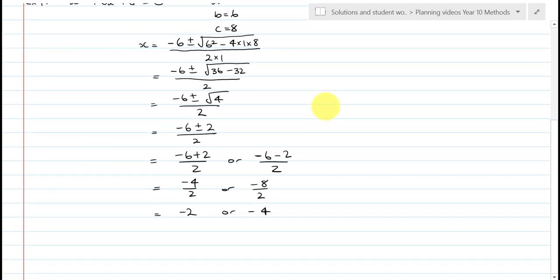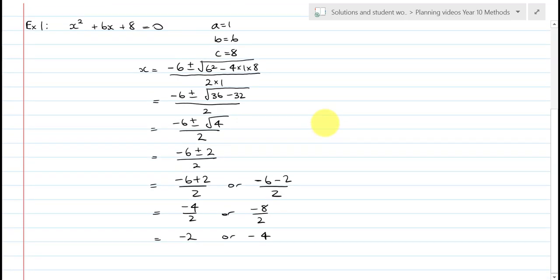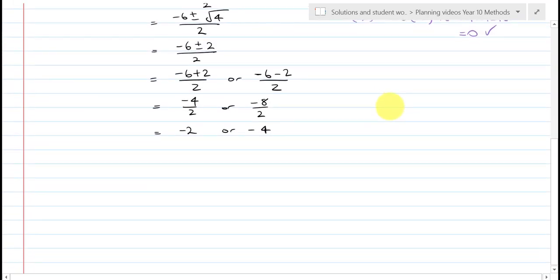And you can check that by factorising this to see if it works. The other way you can check it, with a quick verification, is if these work, they should satisfy the equation. So, let's try one. Negative 2 squared, plus 6 times negative 2, plus 8, is equal to 4, minus 12, plus 8, which is equal to 0, which is what it should be equal to. So, you can do that really quick check as well.